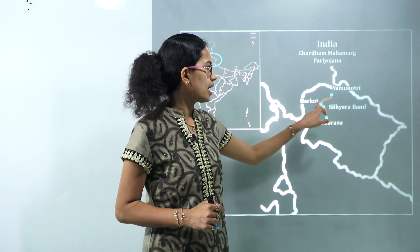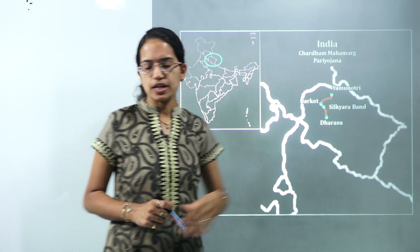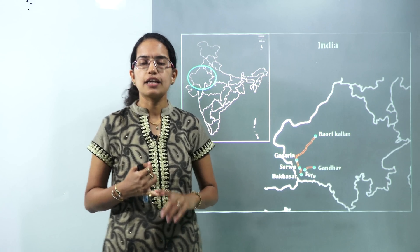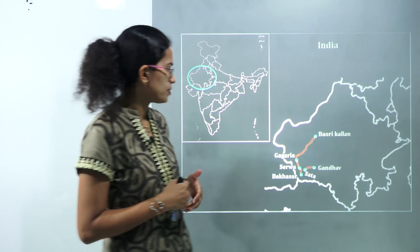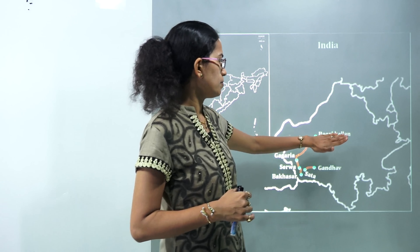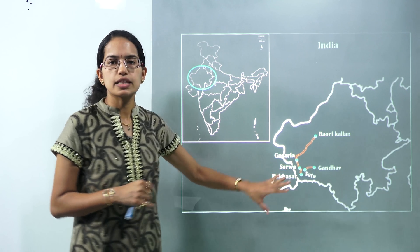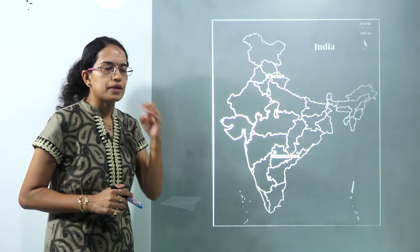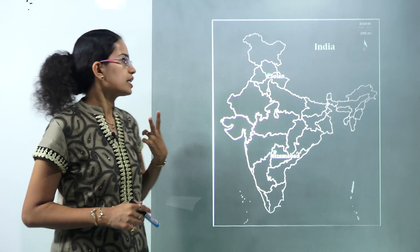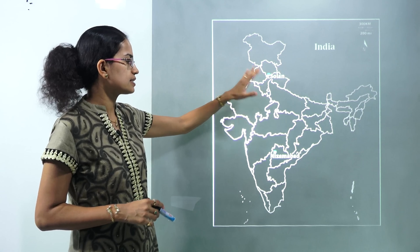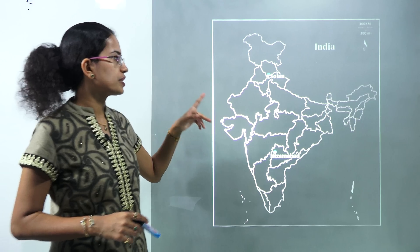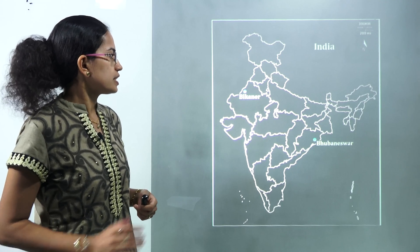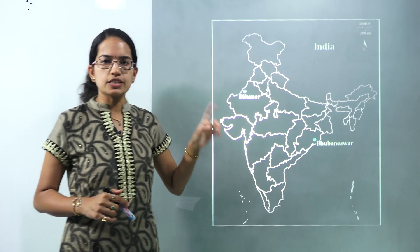The Silkyara–Barkot tunnel is part of the Chardham Mahamarg Pariyojana. Next, in Rajasthan, National Highway 925 and 925A have been connected, linking the regions of Gagriya and Baroikalan. Following that, the best implementation of the ENAM project — the Electronic National Agricultural Market — has been seen in two areas: Solan in Himachal Pradesh and Nizamabad in Telangana.